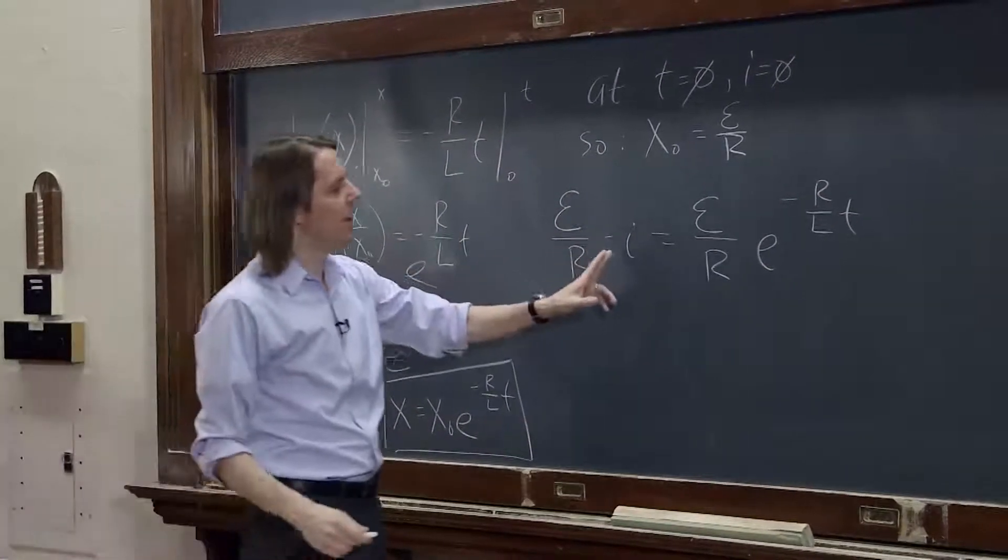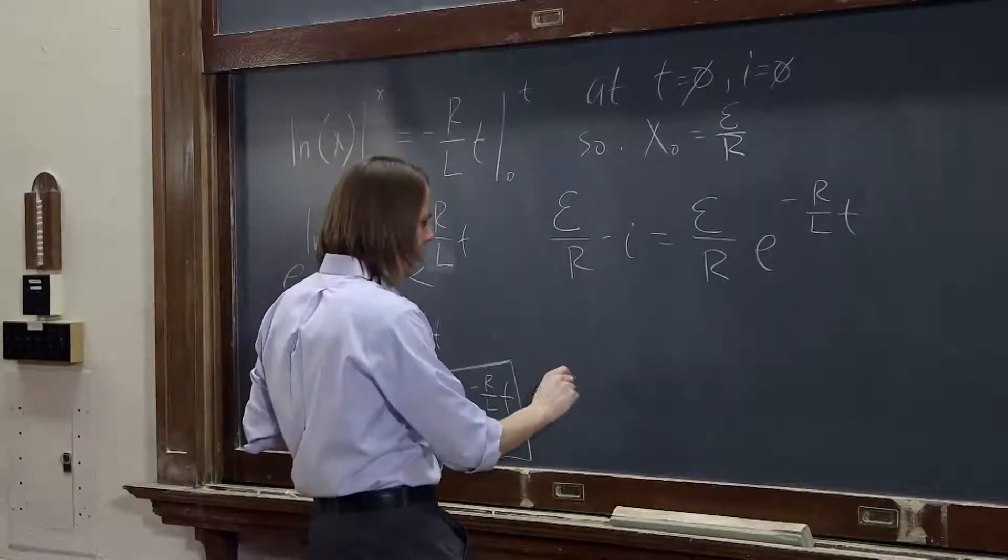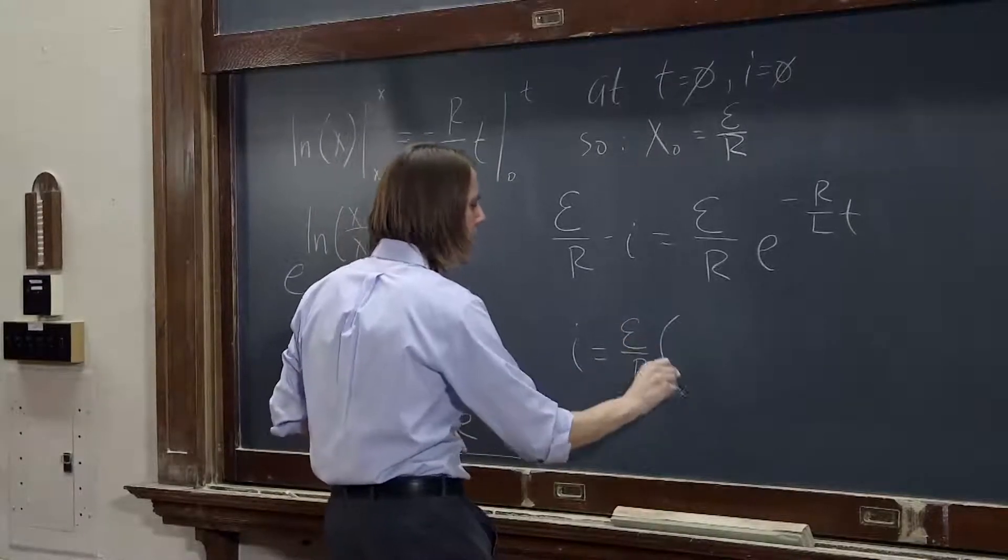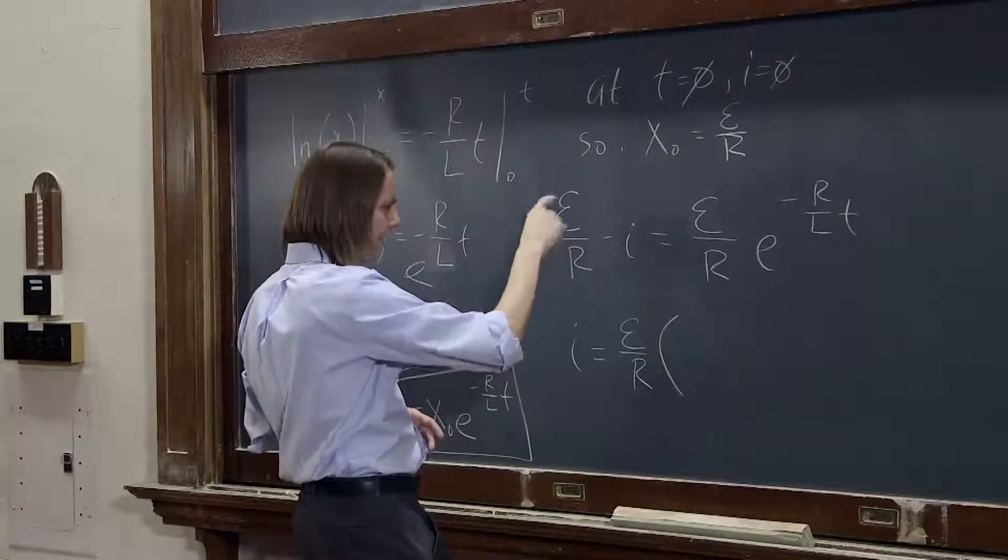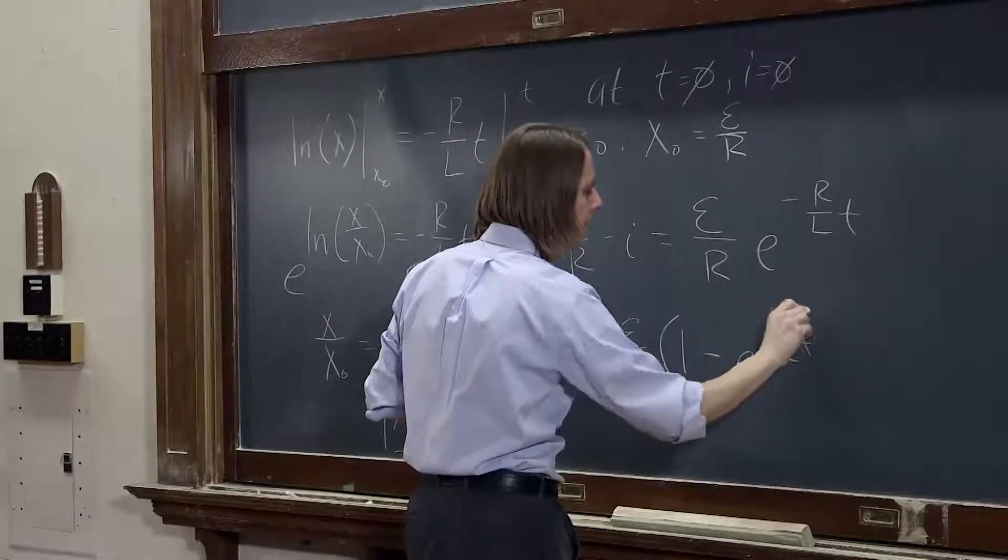And then you solve for i. So you bring i over here, you bring this over here, you divide through by the emf over r, and you get that i equals the emf over r times, it looks like this is over here, 1 minus e to the minus r over l, t.